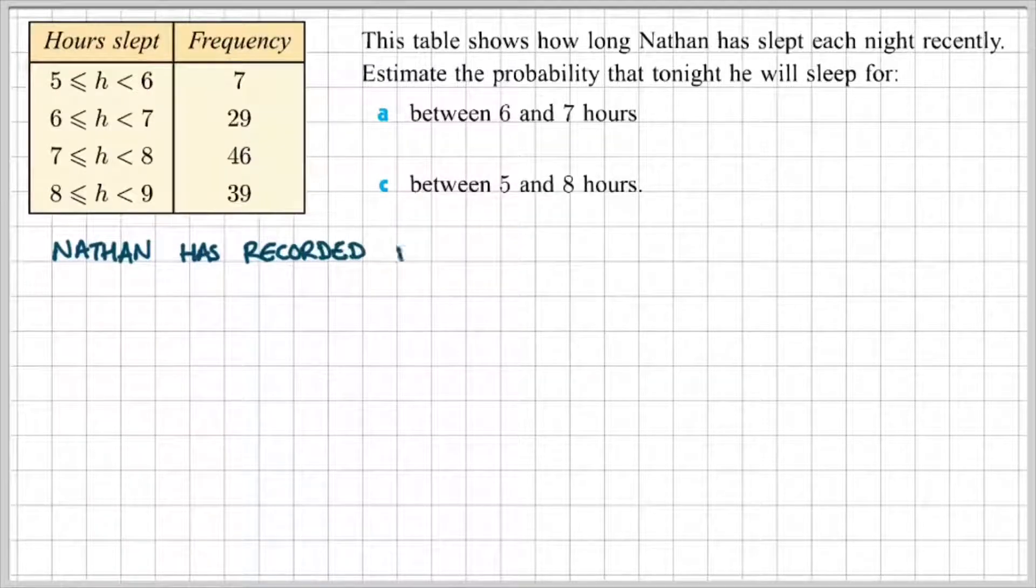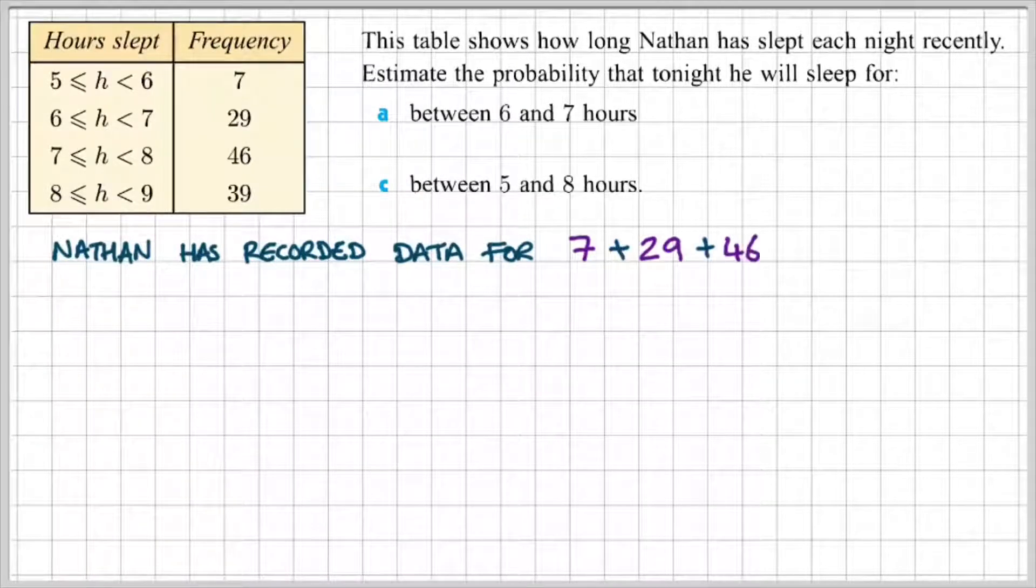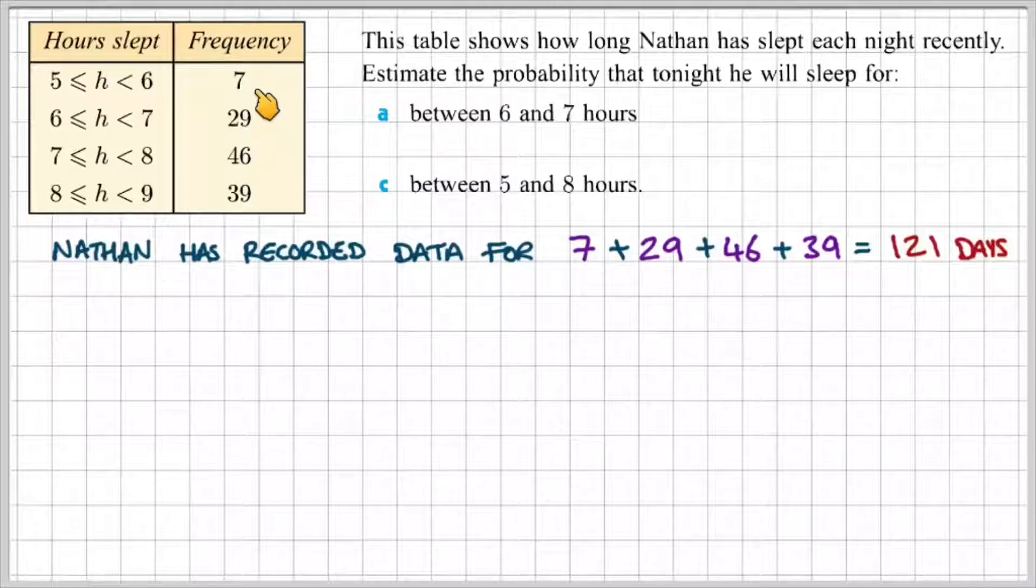Okay, so before attempting to solve this problem, we know that Nathan has recorded data for a total of 121 days, and that we can find out by adding the frequencies from the table. So, 7 plus 29 plus 46 plus 39 will give us 121 days.